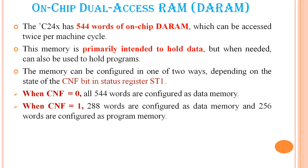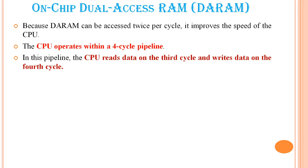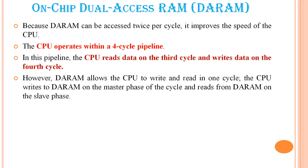On-chip dual-access RAM is primarily intended to hold data, but we can use it as program memory by setting CNF to 1. Because the DA RAM can be accessed twice per cycle, it improves the speed of the CPU. The CPU operates within a four-cycle pipeline, where it reads data on the third cycle and writes data on the fourth cycle. However, the DA RAM allows the CPU to write on the master phase of the cycle and read from the DA RAM on the slave phase.